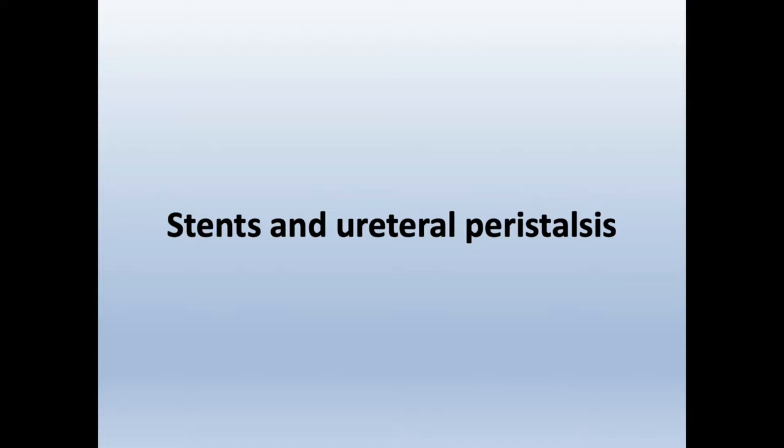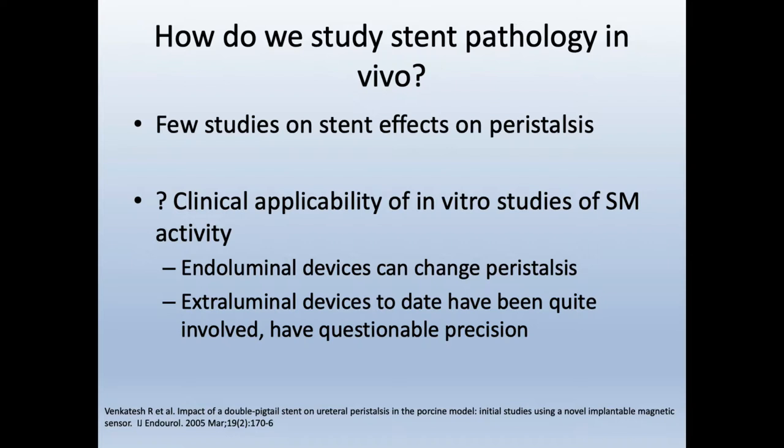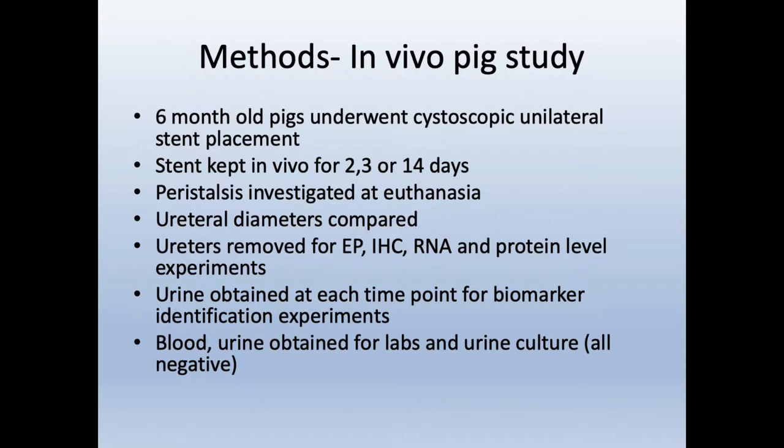Regarding stents and peristalsis — there are a few studies on what those effects are. The question is the clinical applicability of doing in vitro studies, because endoluminal devices can change peristalsis, making it difficult to study, and extra-luminal devices created to date have been quite involved in their usage with questionable precision. So we decided to do an in vivo pig study. We started with six-month-old pigs who underwent cystoscopic unilateral stent placement, with an internal control where the contralateral ureter was unstented. Stents were kept in vivo for two, three, or 14 days.